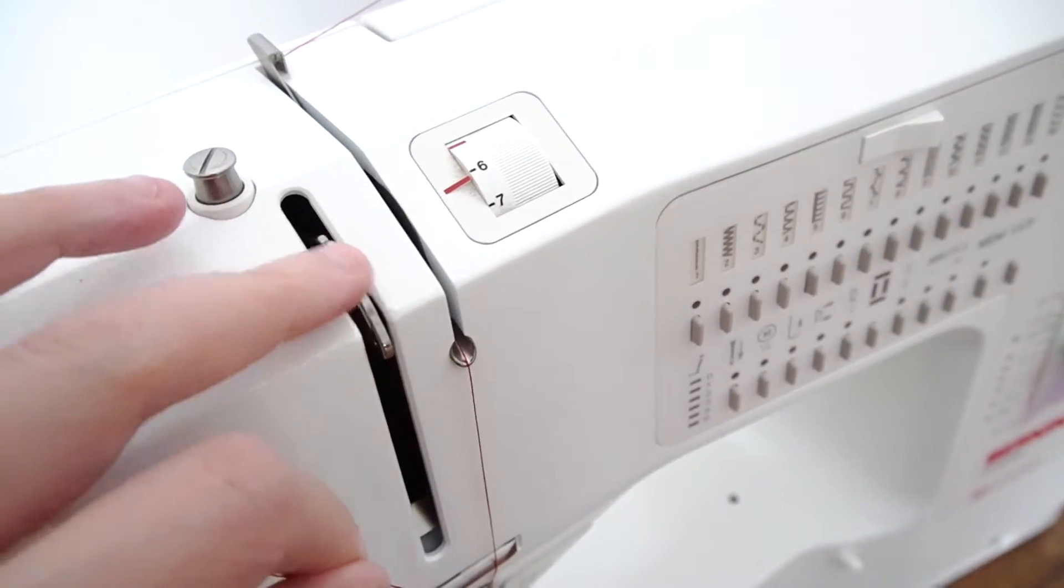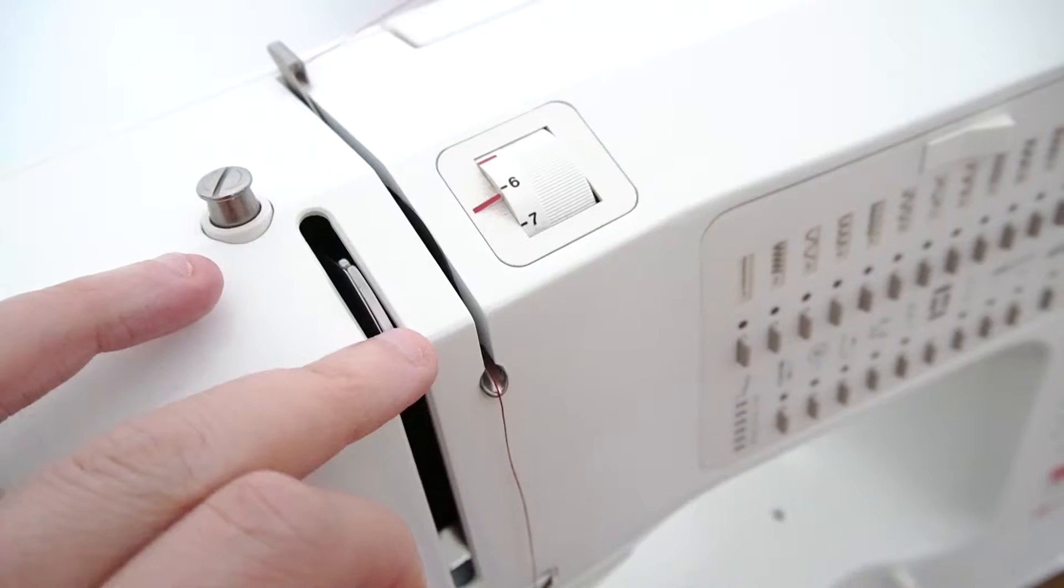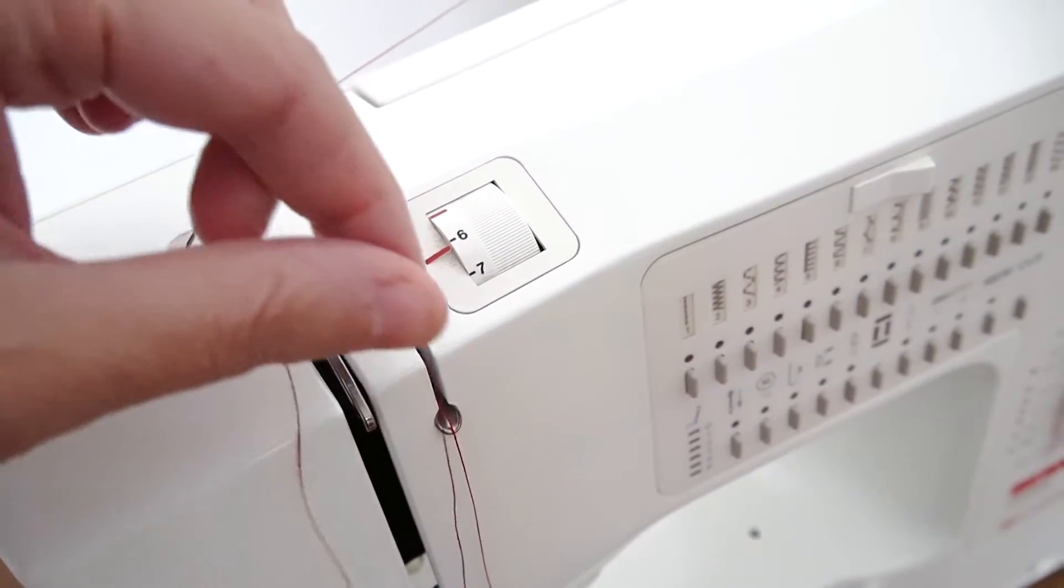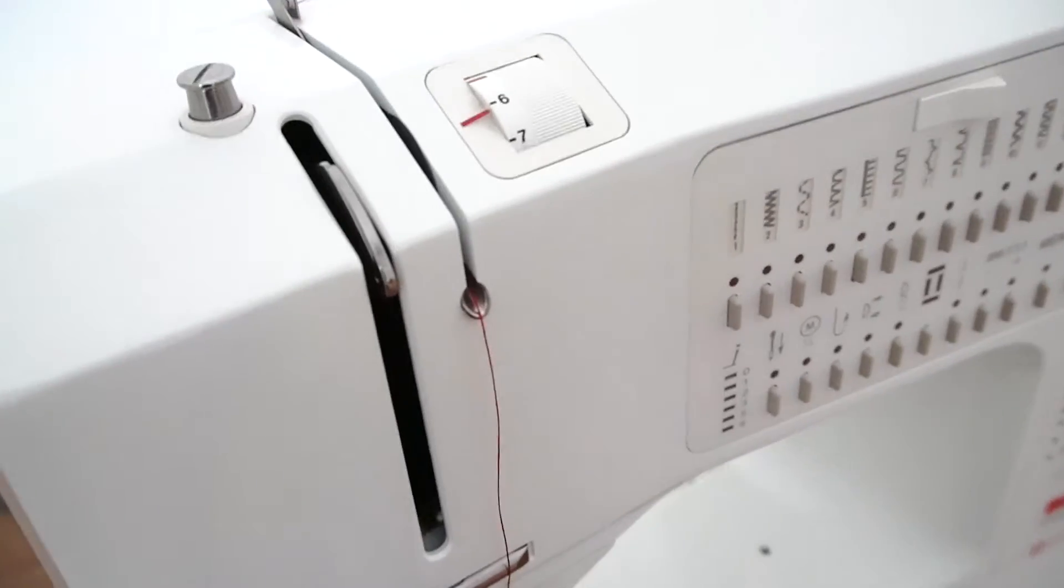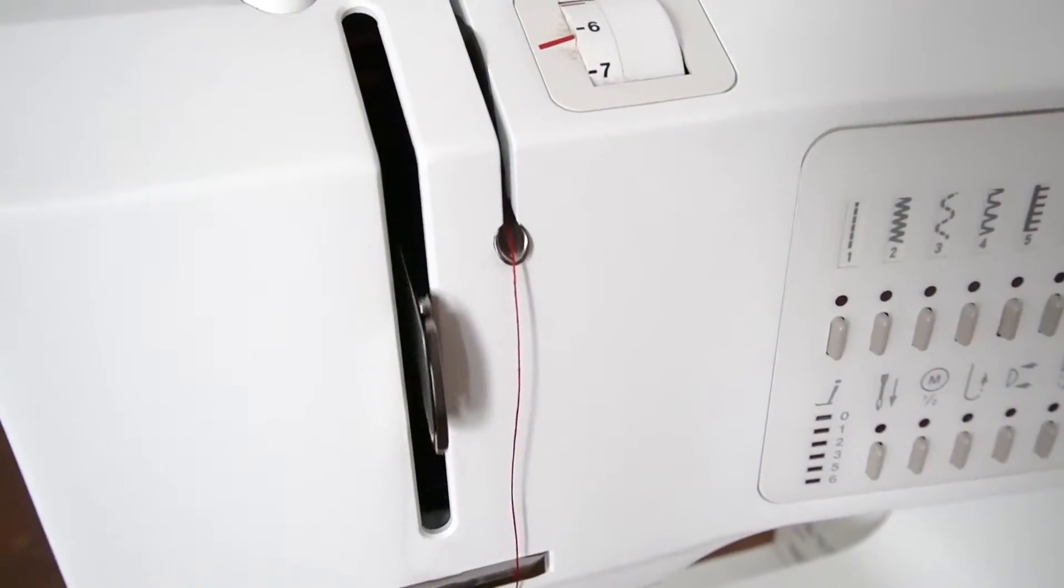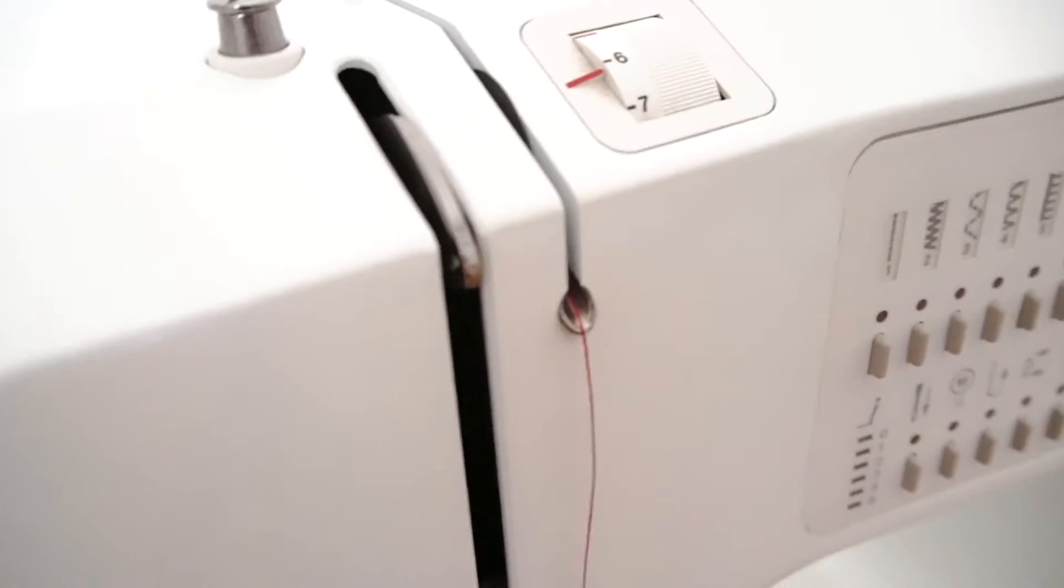And then this little lever right here is called the take-up lever. It needs to be in its fullest, utmost position in order to be able to thread it from one side to the other. If it's down in the machine, you can always hand turn the crank wheel. See, so if it's down here that won't work, you need it to be all the way up at the top. You can use the hand wheel to turn it.